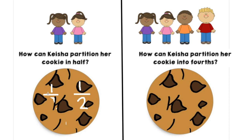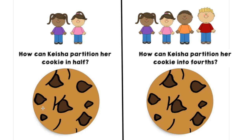Let's think of another way that Keisha could partition her cookie in half. Another way she could partition her cookie in half is by cutting it horizontally, which means from left to right. I need to make sure there are two equal parts. If I cut the cookie unevenly, yes I have two parts but they are not equal — this part is way smaller than this part. If I want to partition this cookie in half horizontally, I need to start in the middle. Keisha would have one out of the two parts, and her friend would have one out of the two parts, so each of them would receive half of the cookie.